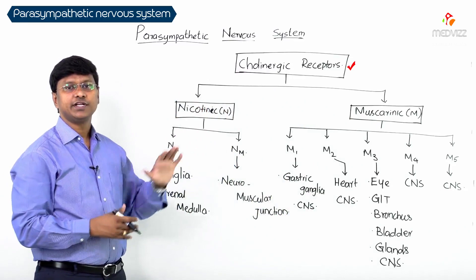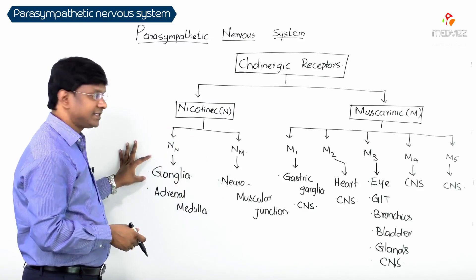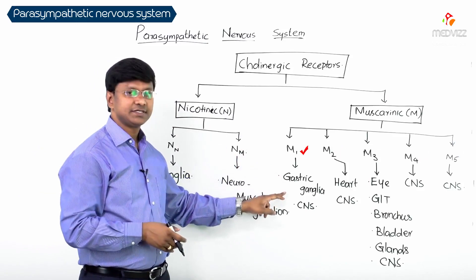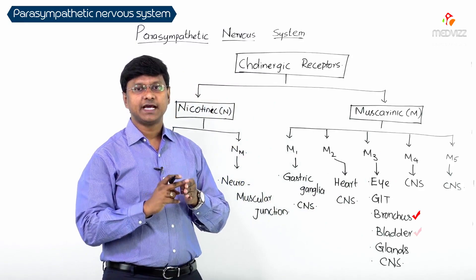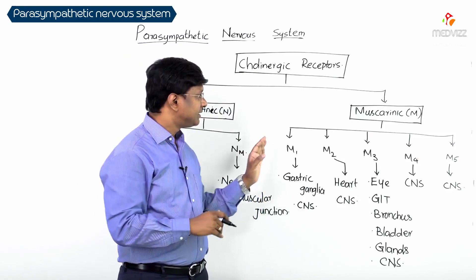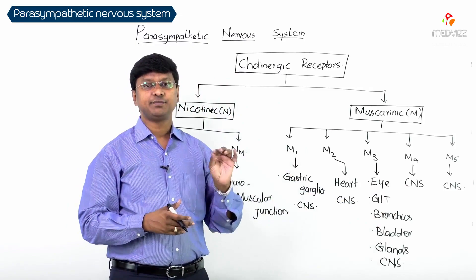To summarize, cholinergic receptors include nicotinic and muscarinic receptors. Nicotinic receptors: NN is present in the ganglia and adrenal medulla; NM is present at the neuromuscular junction. Muscarinic receptors have five types — M1 in gastric ganglia and CNS; M2 in heart and CNS; M3 in eye, GIT, bronchus, bladder, glands, and CNS; M4 and M5 in CNS. A key point: all muscarinic receptors, M1 through M5, are present within the central nervous system.